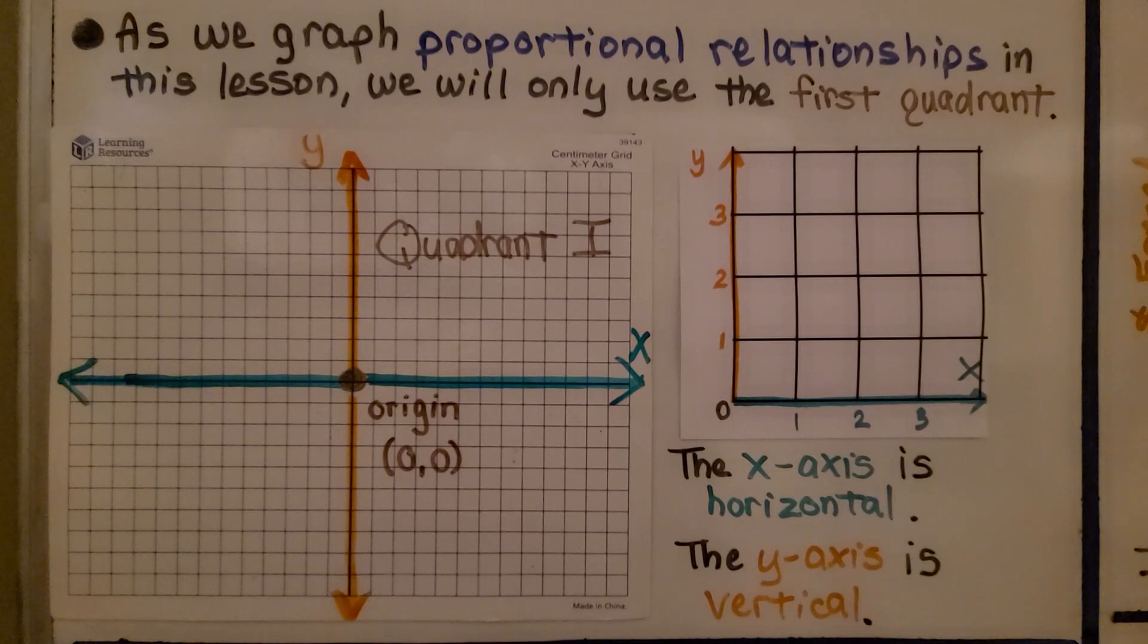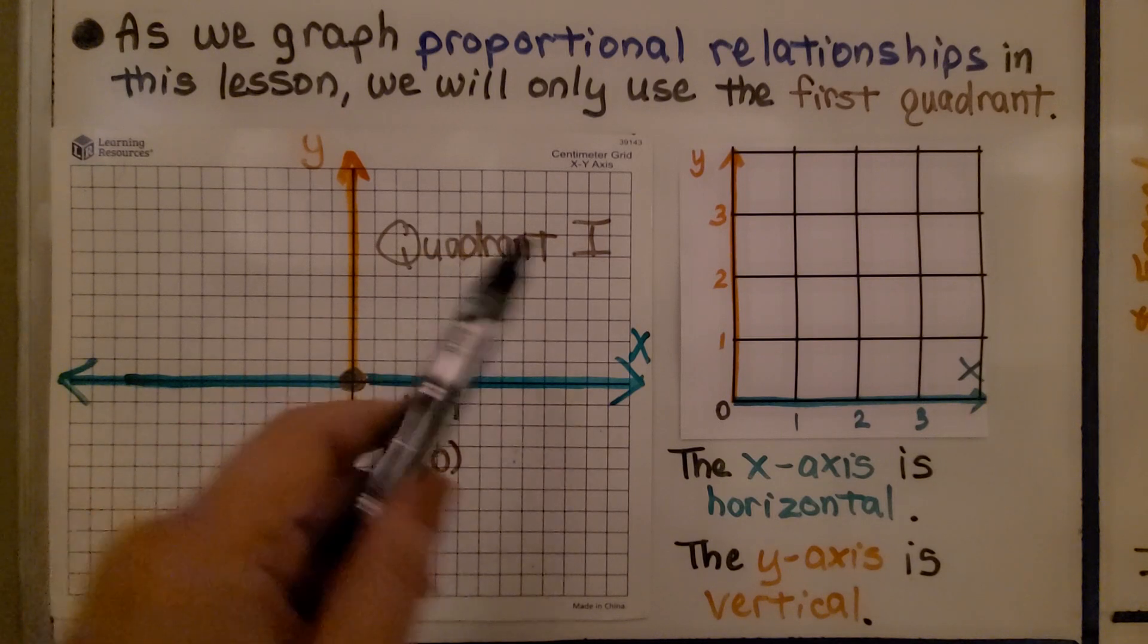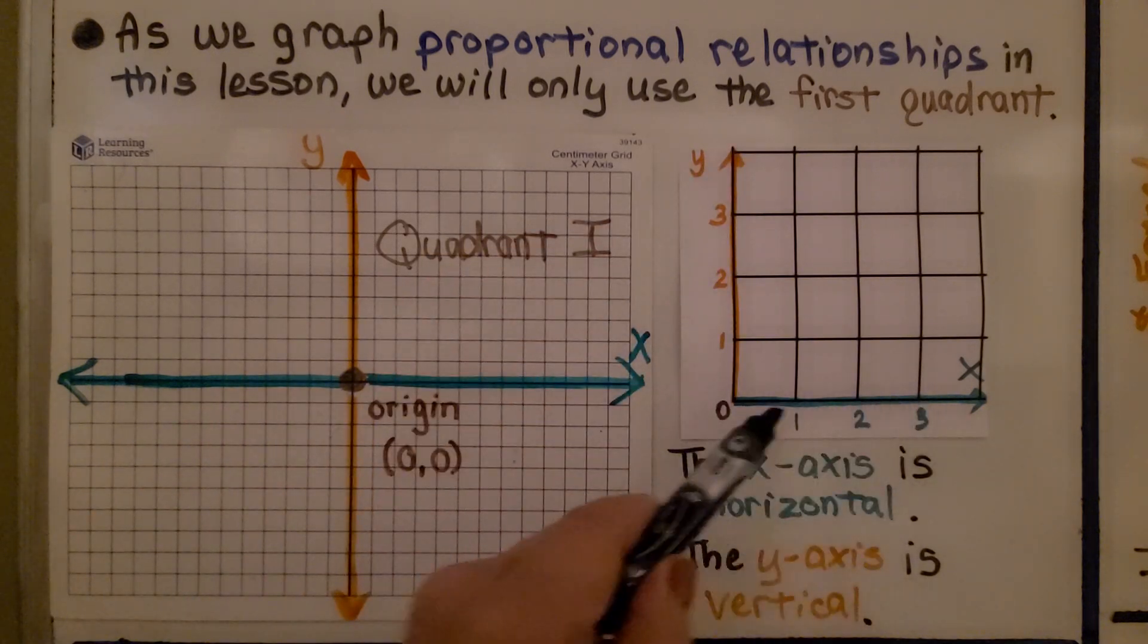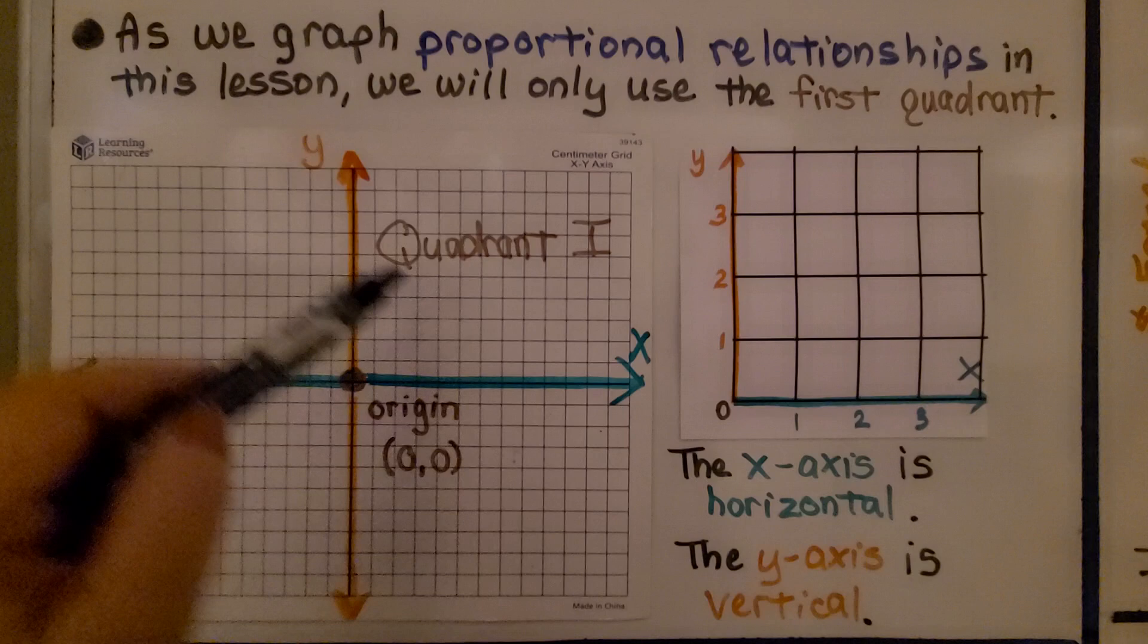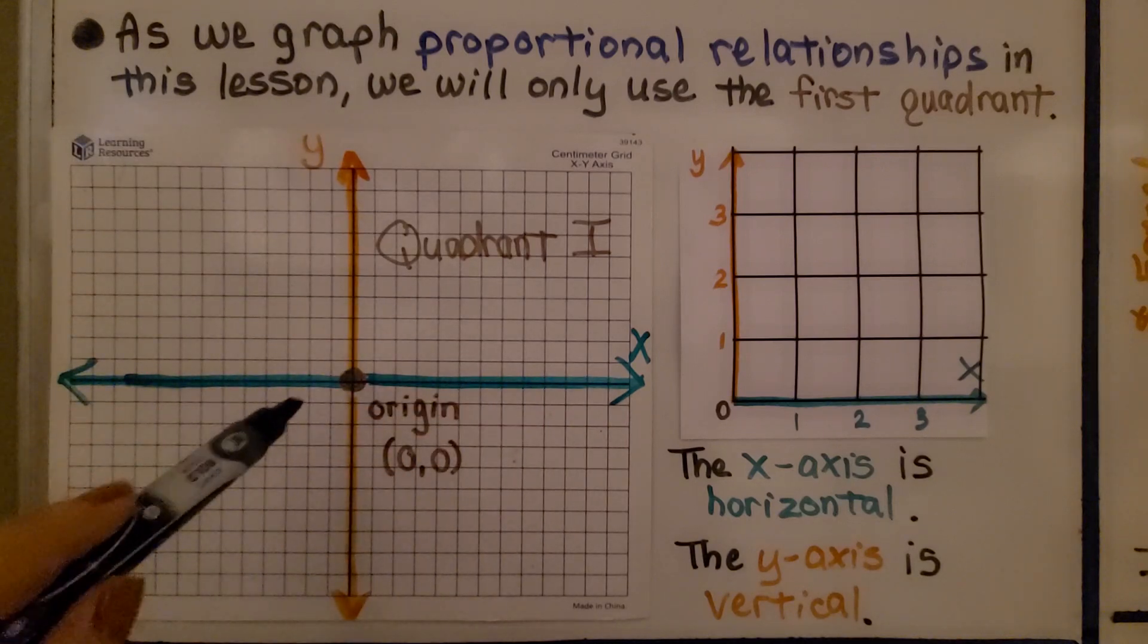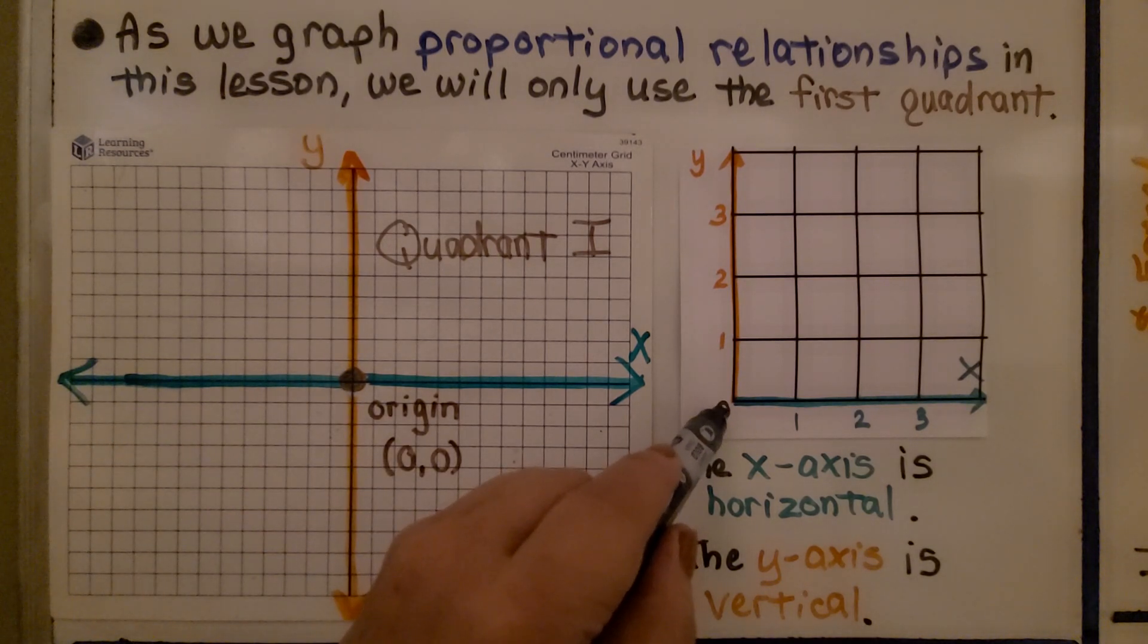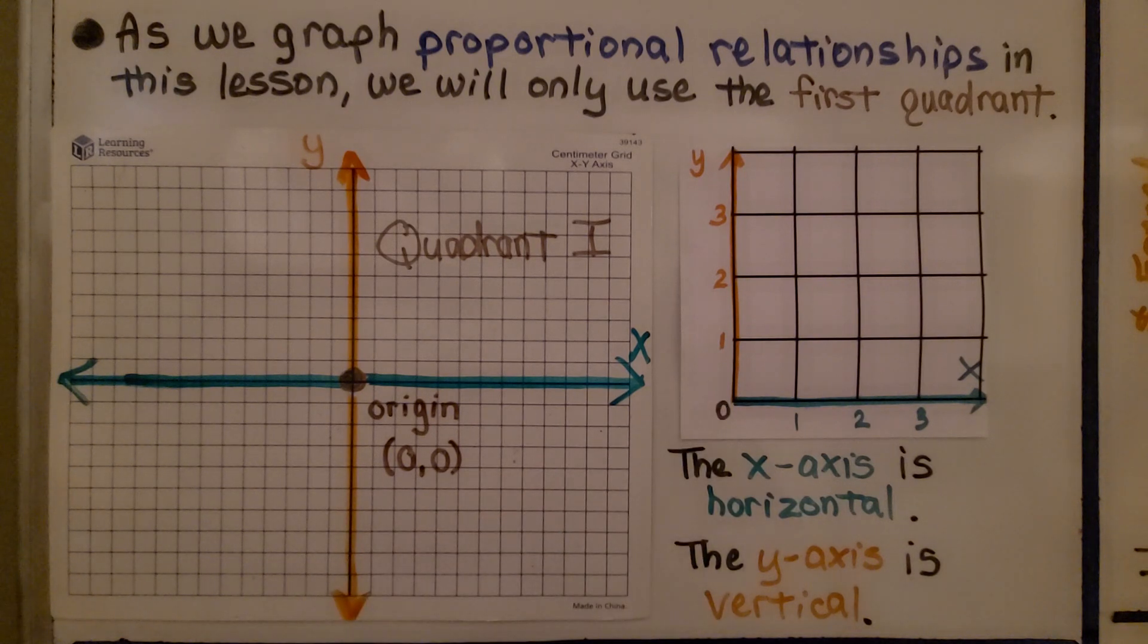As we graph proportional relationships in this lesson, we will only use the first quadrant, quadrant 1. So it's going to look like this. This is quadrant 1. We have our vertical Y and our horizontal X. We can see (0,0) is the origin. It's where 0 for X and 0 for Y intersect.